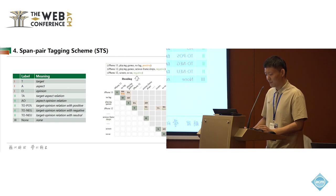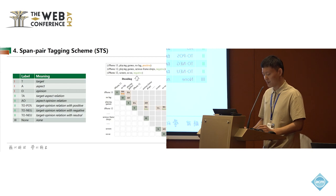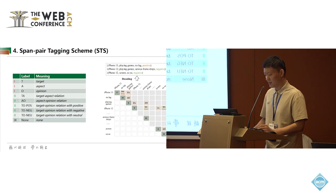For span pairs in the diagonal region, we use T, A, and O labels to denote the target terms, aspect terms, and opinion terms. For example, if span pair iPhone 13, iPhone 13 is tagged with the T label, then span iPhone 13 is a target term.